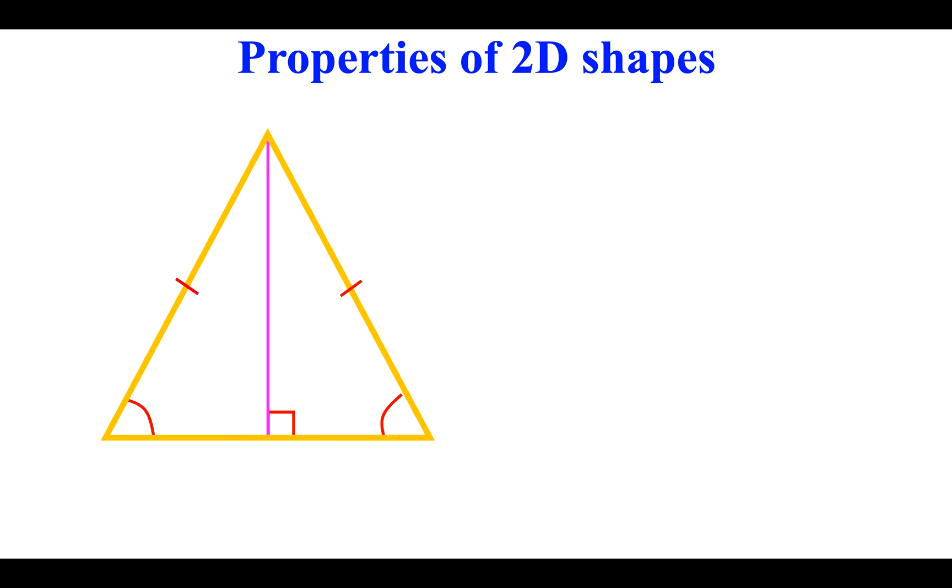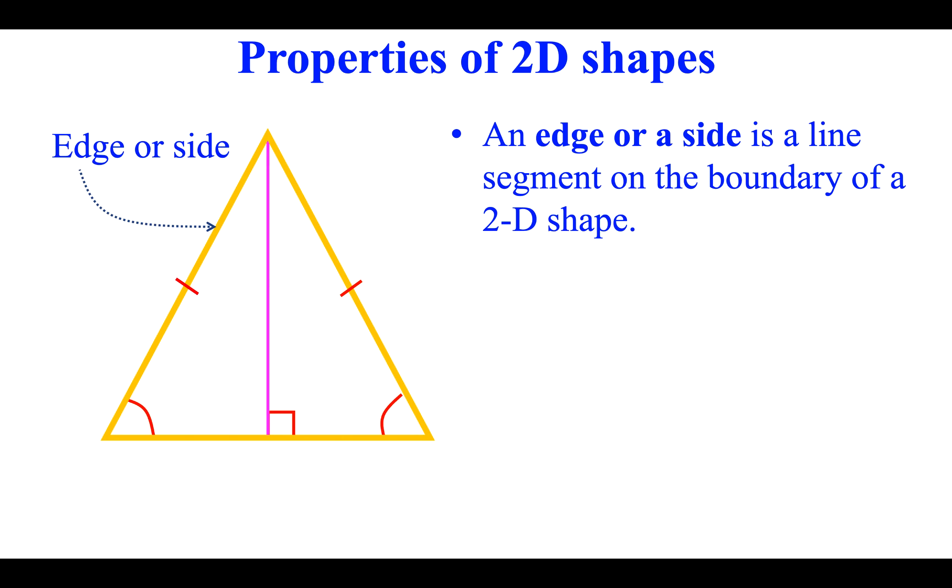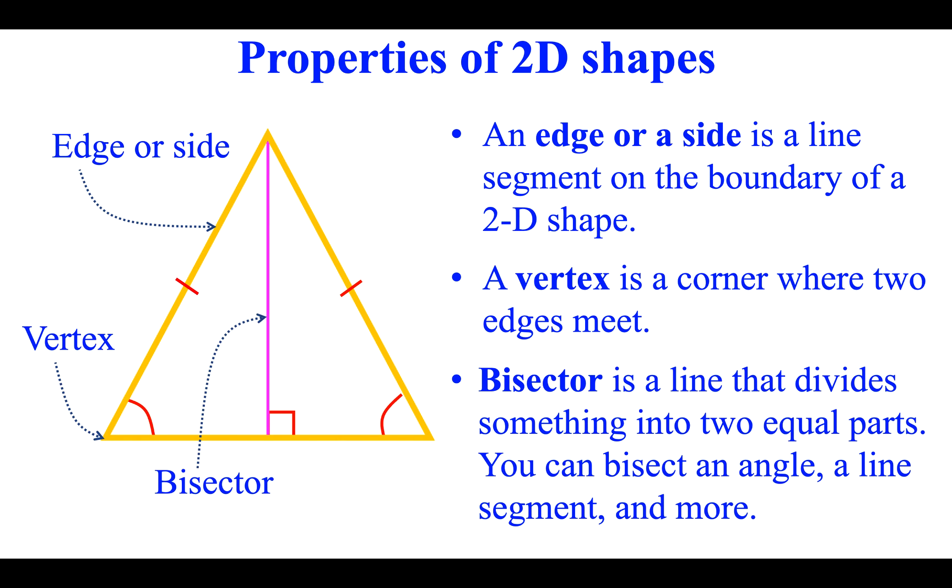Properties of 2D shapes. Edge or side: An edge or a side is a line segment on the boundary of a 2D shape. Vertex: A vertex is a corner where two edges meet. Bisector is a line that divides something into two equal parts. You can bisect an angle, a line segment, and more.